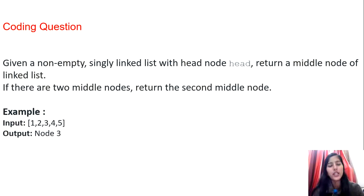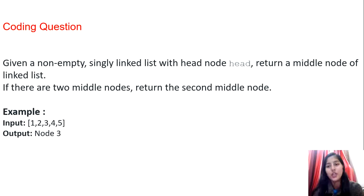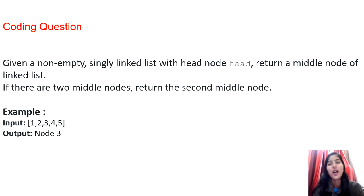The question is: given a non-empty singly linked list with the head node, return the middle node of the linked list. If there are two middle nodes, return the second middle node. A function is given to you and you have to return the middle node of the linked list. There are basically three approaches to solve this question — I will discuss two important optimizable ones.